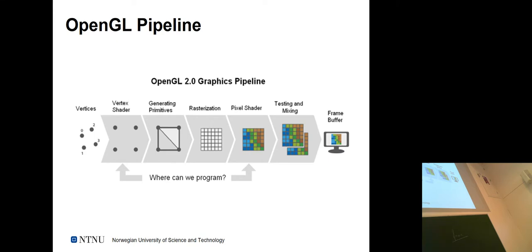A student explains: You start off with vertices, then you try to make more vertices from the ones you have. Then tessellation makes even more vertices — subdivision — and rasterization works between all the vertices for each individual pixel. The final stage is basically plotting it to the graphics driver, projecting it to the screen, to the frame buffer.